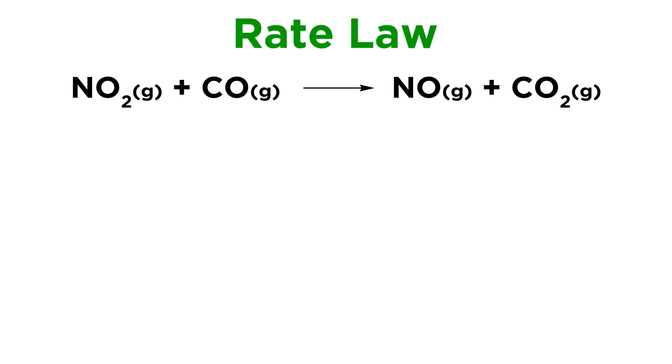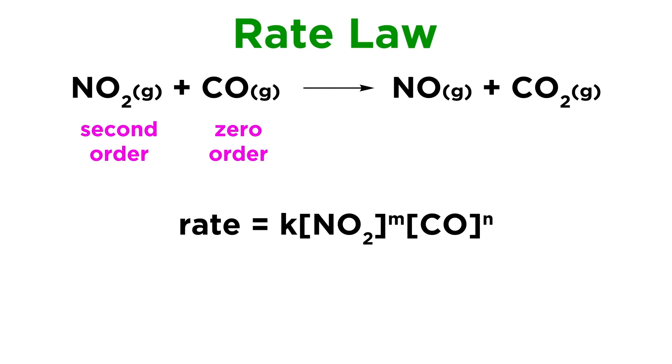Say we are examining the reaction of nitrogen dioxide and carbon monoxide to form nitrogen monoxide and carbon dioxide. If we acquire kinetic data and find that the reaction is second order in NO2 and zero order in CO, what will be the rate law for this reaction?